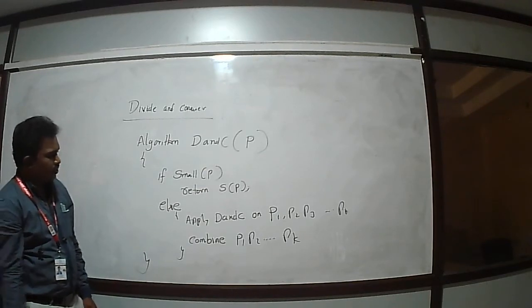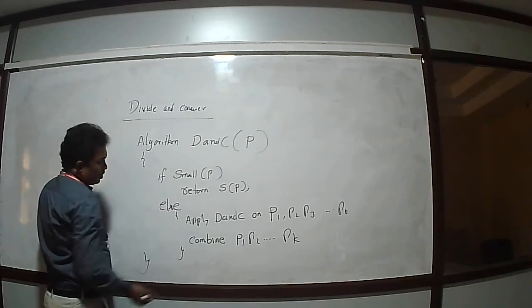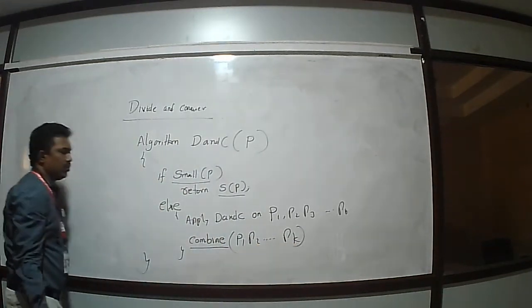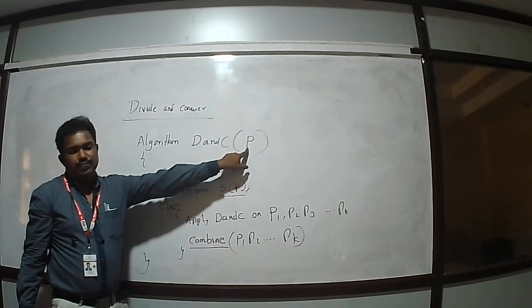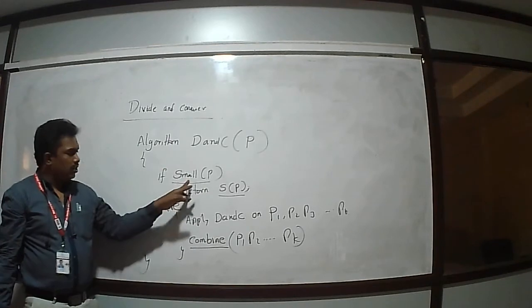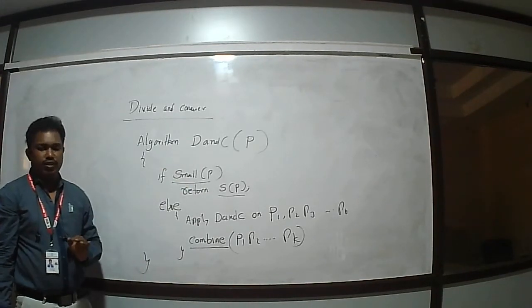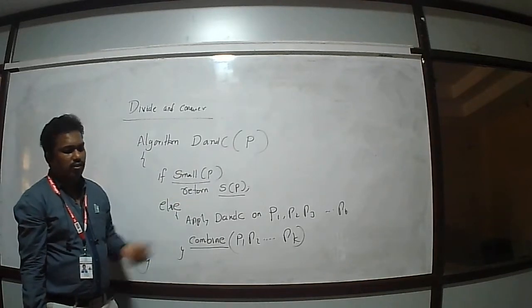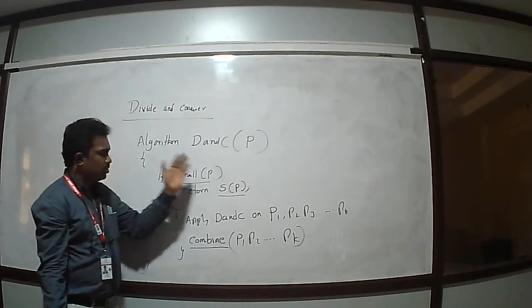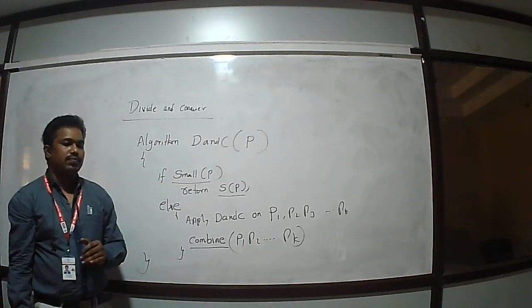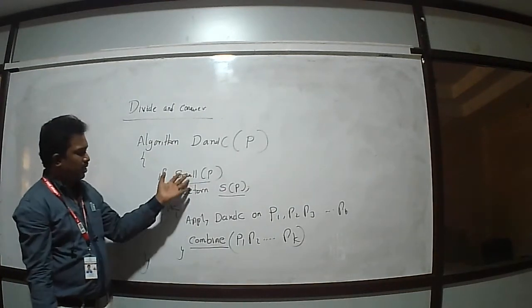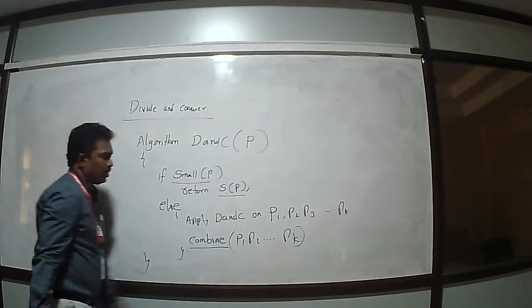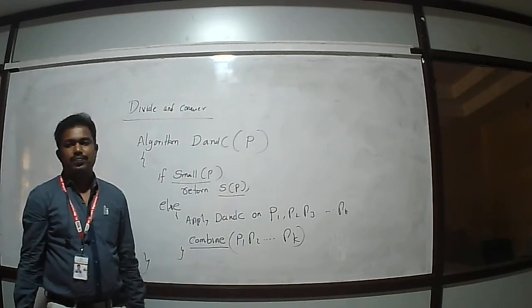There are three functions in this control abstraction. One is Small(P), the second is S(P), and the third is Combine. P here represents the Problem. Small(P) is a boolean function that checks whether the problem is complex or not. If the problem is large, it returns false; if the problem is small, it returns true. When it returns true, S(P) executes and returns the final solution of the given problem.